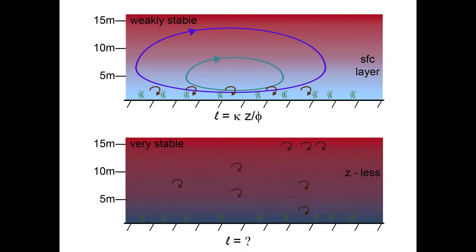In the weakly stratified case, the vertical size of eddies decreases with increasing stratification. This effect is incorporated into the formulation by dividing kappa Z by phi, the so-called stability function. Phi is unity with no stratification and increases with increasing stratification.